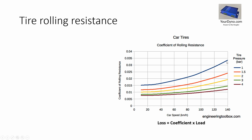The other thing to notice is that the losses are very dependent on tire pressure. As you can see, one bar versus four bars — a big, big difference. Make sure you don't under-inflate your tires when you want to test them. The third thing to notice is that this is what's called the coefficient of rolling resistance. The loss equals this coefficient times the load, where the load is the load on those driven wheels when you do your dyno run.